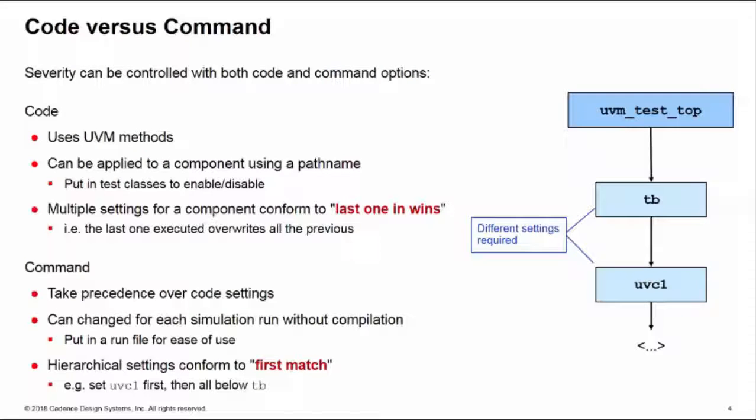The other option is to use command line settings. These take precedence over the code settings. They're applied at the highest level of the UVM environment inside of the UVM root level. The nice thing about these is they're dynamic. You can change them from one simulation run to the other without having to recompile your environment. You can put these in a run file for greatest ease of use.